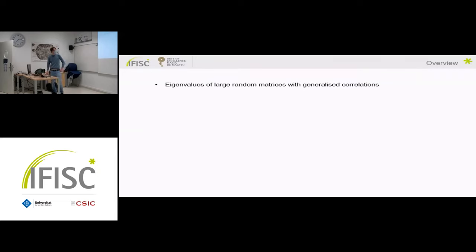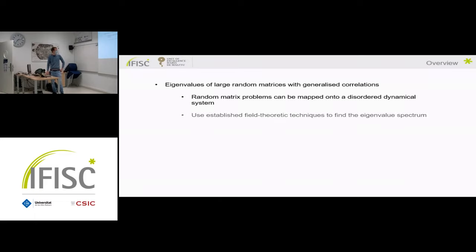Initially I'll be talking about quite an abstract mathematical problem to do with the eigenvalues of large random matrices with what I'm going to call generalized correlations. This is quite a complicated technical problem and required us to develop some new analytical procedures. I'm going to discuss how a random matrix problem like this can be mapped onto a disordered dynamical system, and how we can use established field-theoretic techniques to find the eigenvalue spectrum.